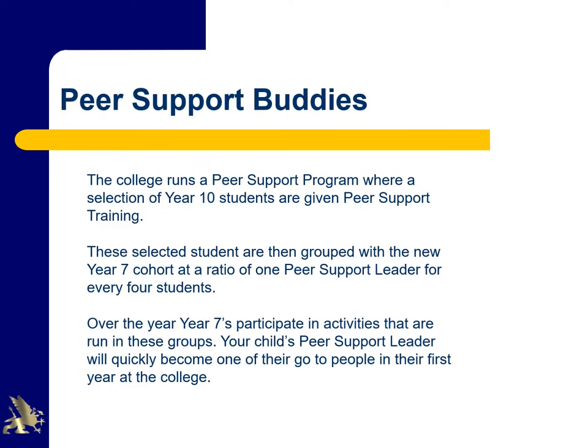The college runs a peer support buddy program, where a selection of Year 10 students are given peer support training. These selected students are then grouped with the new Year 7 cohort at a ratio of one peer support leader for every four students. Over the year, Year 7s participate in activities run in these groups. Your child's peer support leader will quickly become one of their go-to people in their first year at the college.